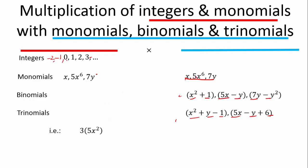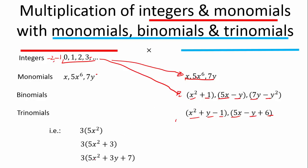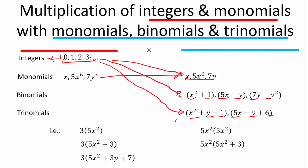For example, 3 times 5x squared — that is an integer multiplied by a monomial. Or 3 multiplied by (x squared + 1) — that is an integer multiplied by a binomial. Or 3 multiplied by (5x squared + 3y + 7) — that is an integer multiplied by a trinomial. Then 5x squared times 5x squared is a monomial multiplied by a monomial. And 5x squared times (something + two unlike terms) is a monomial multiplied by a binomial. And 5x squared multiplied by (5x squared + 3y + 7x) is a monomial multiplied by a trinomial.